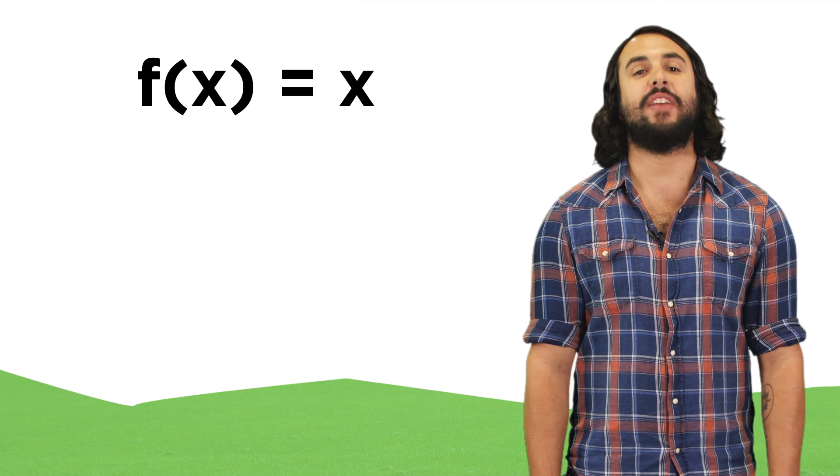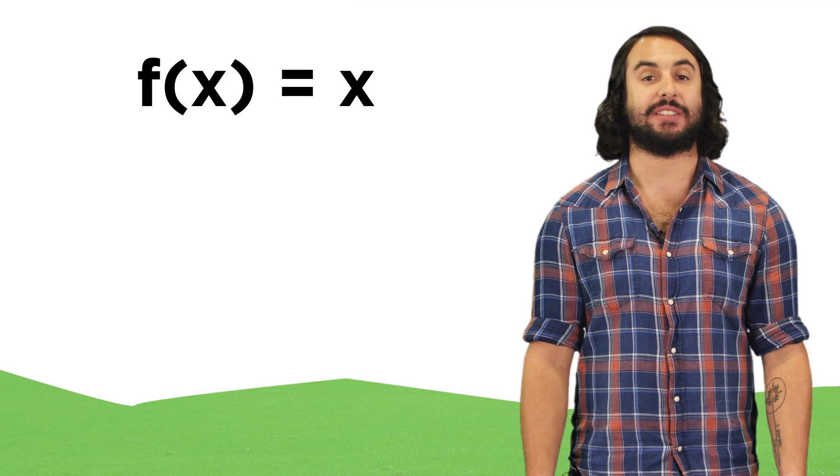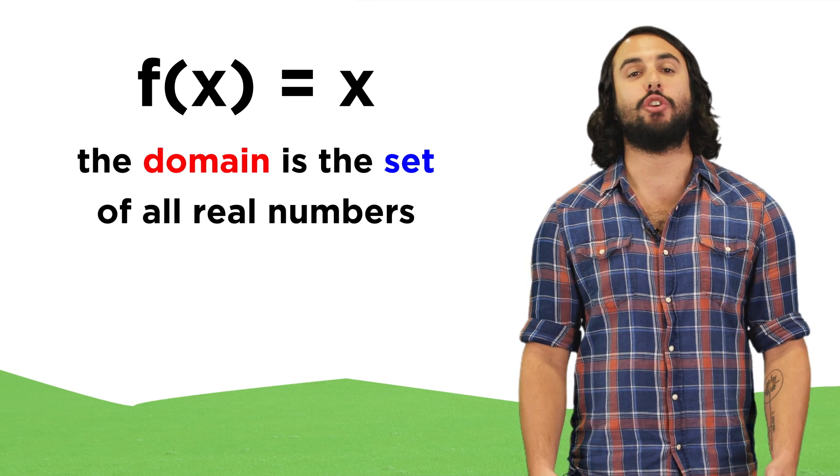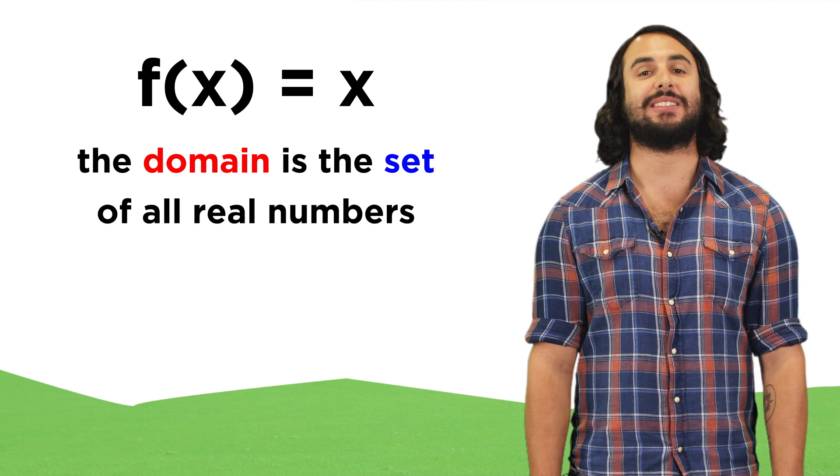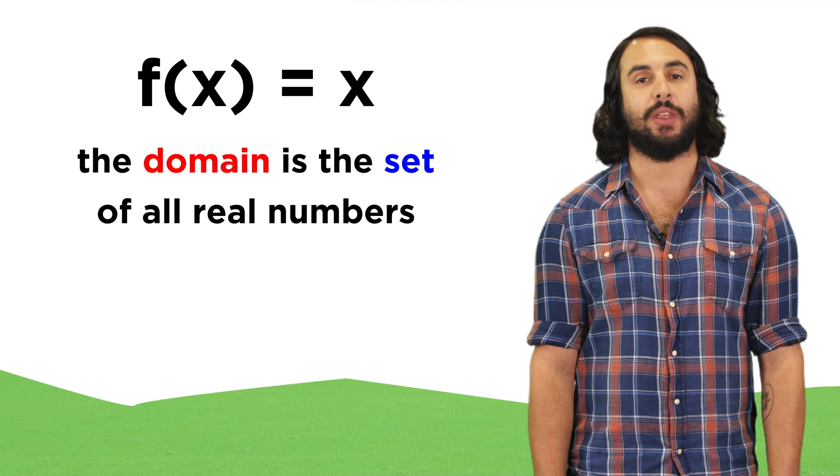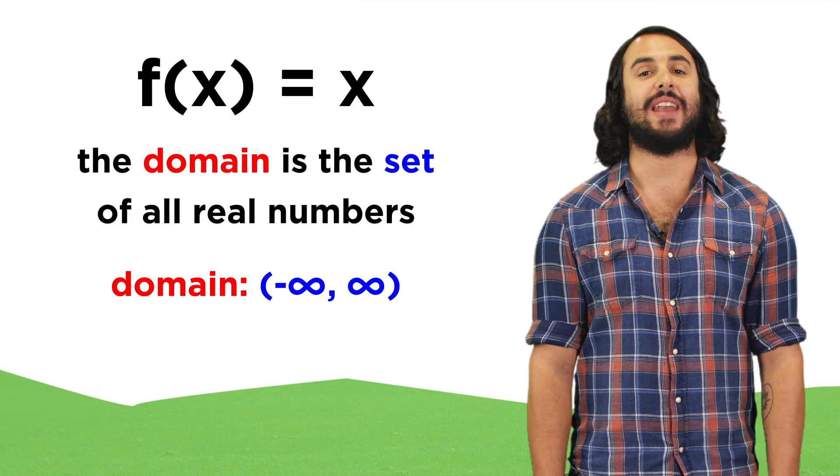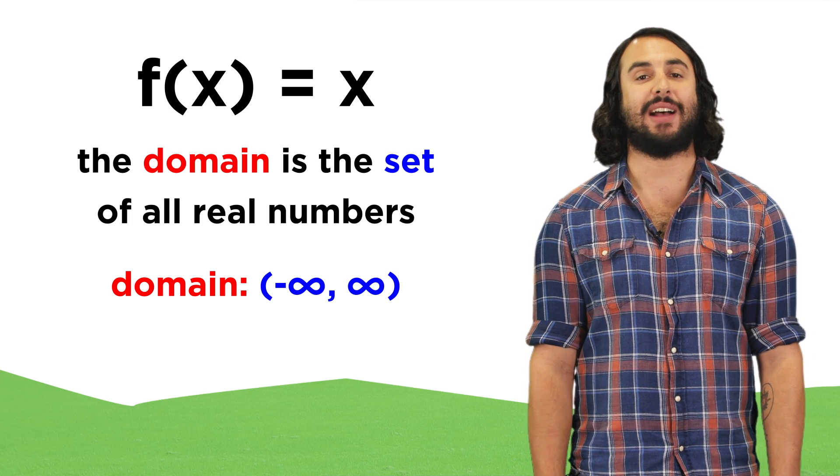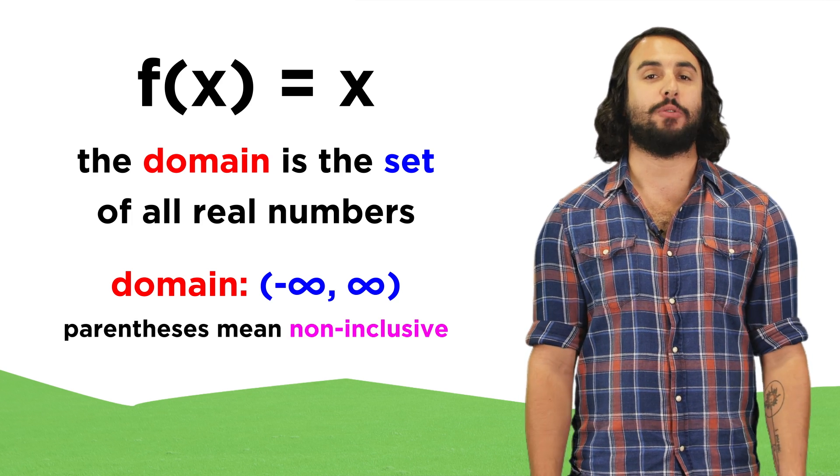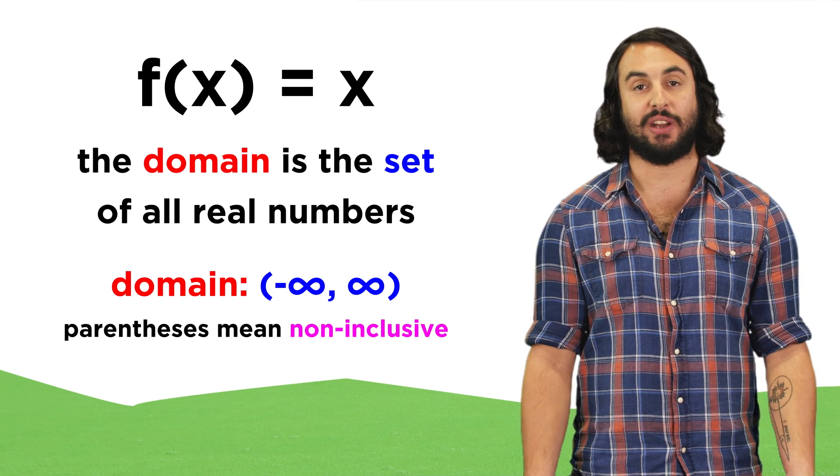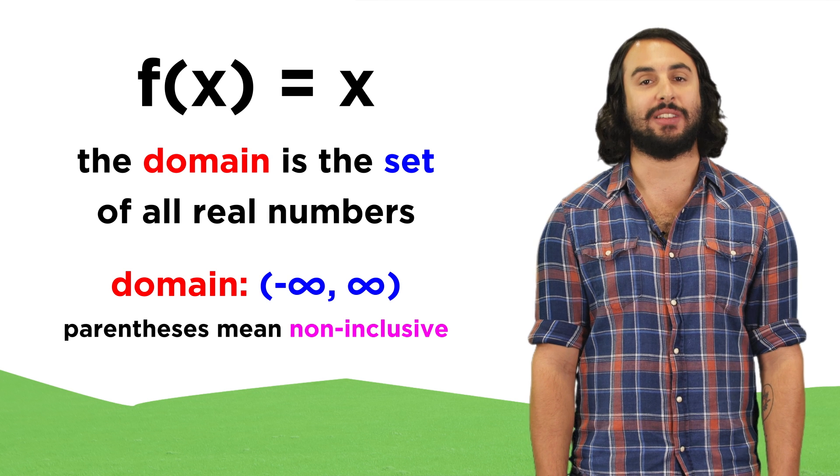As we have been learning algebra, we've been learning about different kinds of sets. If any number can be plugged into a function, then the domain of that function is the set of all real numbers. This can be represented by negative infinity comma positive infinity. We use parentheses because they imply non-inclusivity, and we can never actually get to infinity, so it's not included in the set.